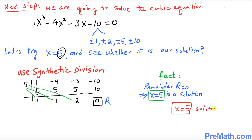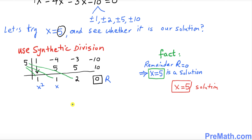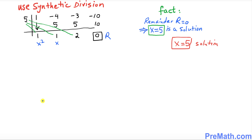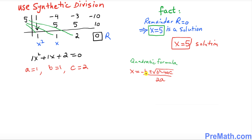So x equals 5 is one of our solutions. The remaining quotient from synthetic division gives us 1x squared plus 1x plus 2 equals 0. This is a quadratic equation, and we will solve it using the quadratic formula, where a equals 1, b equals 1, and c equals 2.